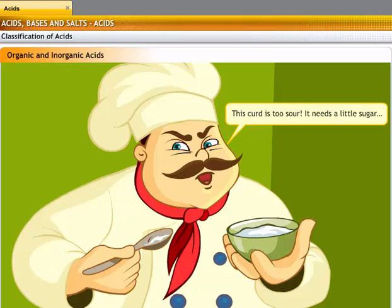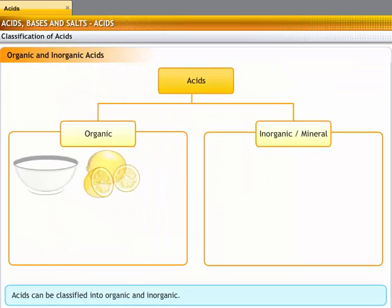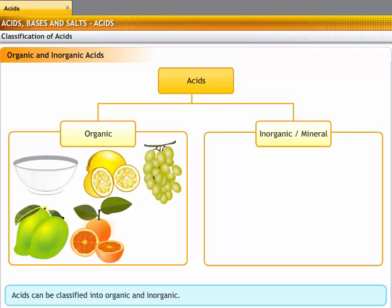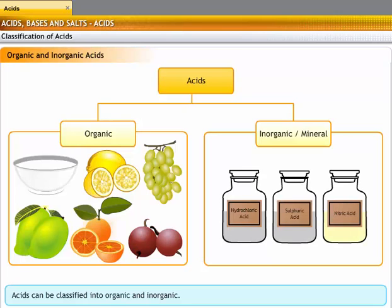This curd is too sour. It needs a little sugar. Curd contains lactic acid, which gives it a sour taste. Acids obtained from food like curd, lemons, grapes, raw mango, citrus fruits, and gooseberry are called organic acids. Hydrochloric acid, sulfuric acid, and nitric acid are called inorganic or mineral acids.